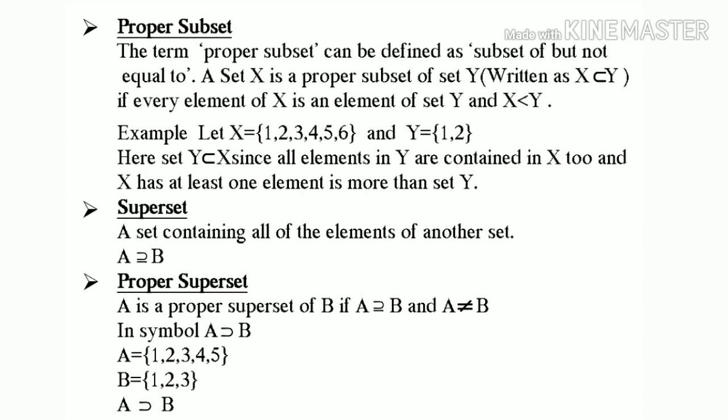Next is superset. A set containing all of the elements of another set. A superset B. Proper superset: A is a proper superset of B if A ⊇ B and A not equal to B. In symbol, A ⊋ B. For example, A equal to {1, 2, 3, 4, 5}, B equal to {1, 2, 3}. A is a superset of B.